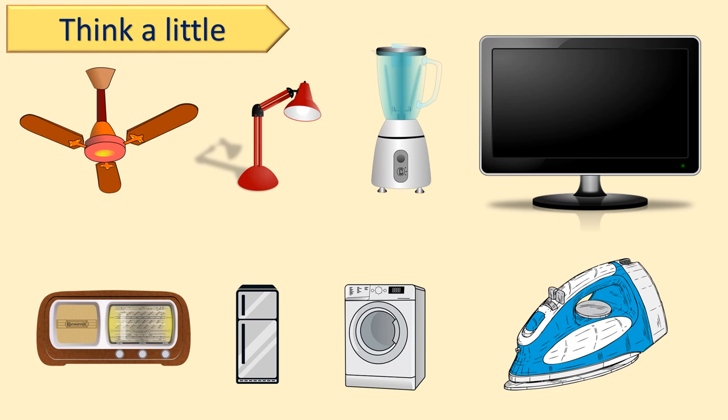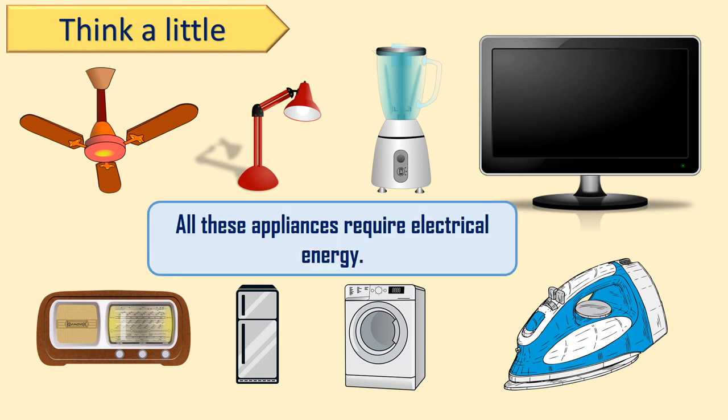Here are some appliances which we use in our daily life: the fan, lamp, mixer, TV, radio, fridge, washing machine, and clothes iron. A very well known and necessary form of energy is electrical energy. Lamps, fans, and all other appliances are run by electricity. These appliances convert electrical energy into light energy, sound energy, mechanical energy, and heat energy. This energy can be transmitted from one place to another with the help of a wire.